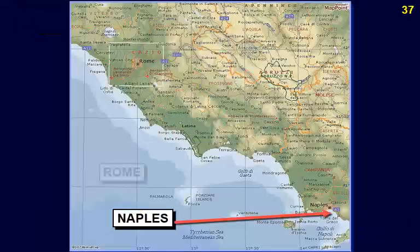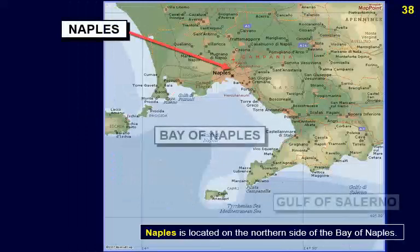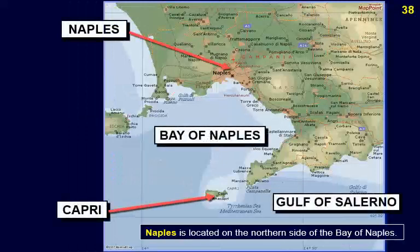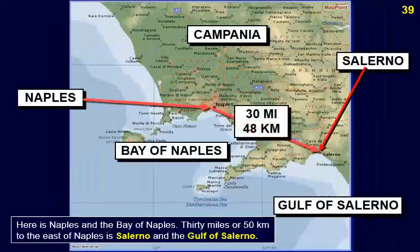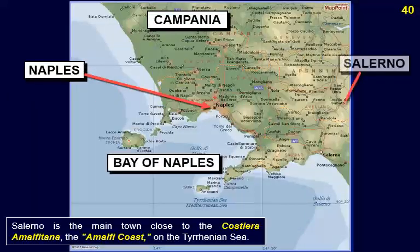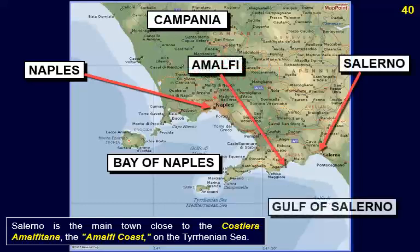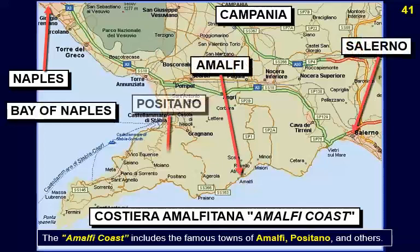Naples is 120 miles or 190 kilometers southeast of Rome, located on the northern side of the Bay of Naples. About 30 miles or 50 kilometers to the east of Naples is Salerno and the Gulf of Salerno. Salerno is the main town close to the Costiera Amalfitana — the Amalfi Coast — on the Tyrrhenian Sea. The Amalfi Coast includes the famous towns of Amalfi, Positano, and others.